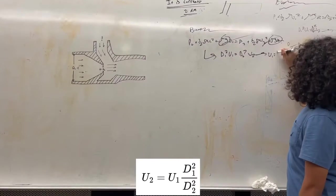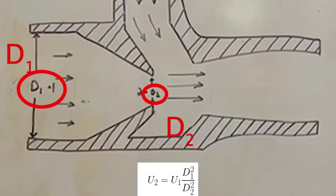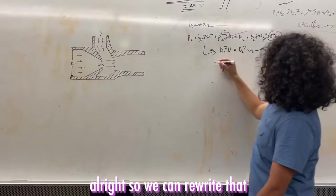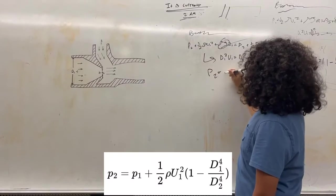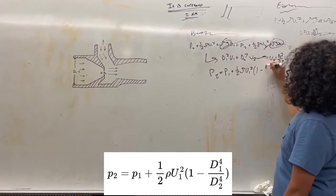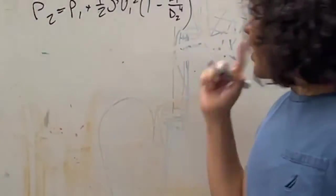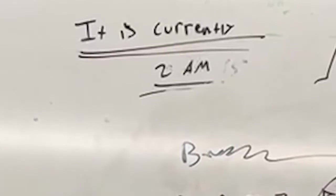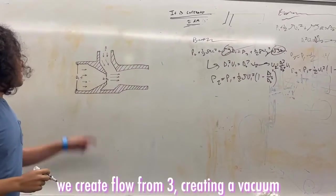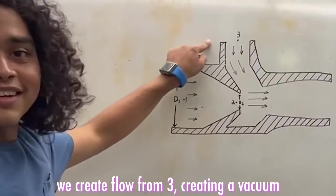U2 is equal to D1 squared over D2 squared times U1. We can write that: U1 plus one half... When D1 is significantly bigger than D2, we create flow from the third port, creating a vacuum.